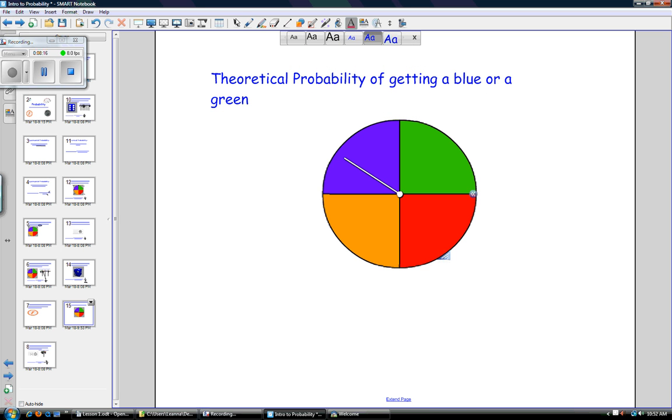we would say that it would equal two, because there's two ways we can get either a blue or a green, and there are four possible outcomes.